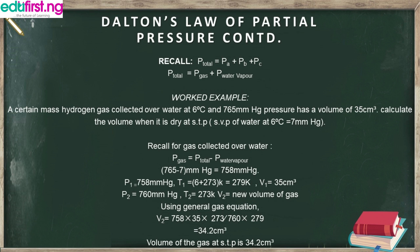Recall that for Dalton's Law of Partial Pressure, we said that P_total equals P_A plus P_B plus P_C. And in cases where the gas was collected over water, we said that P_total equals P_gas plus P_water_vapor. I hope you remember that, so let's look at the worked example.